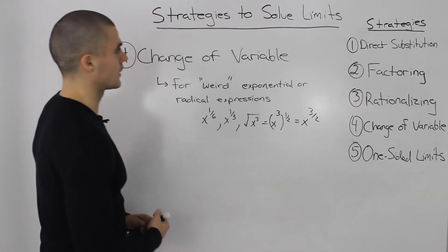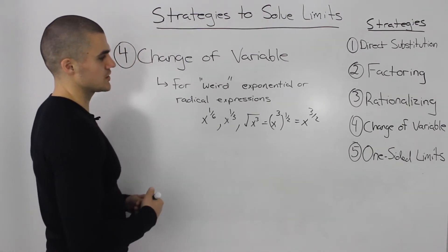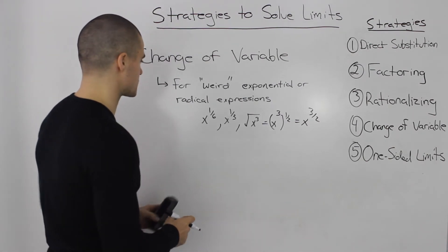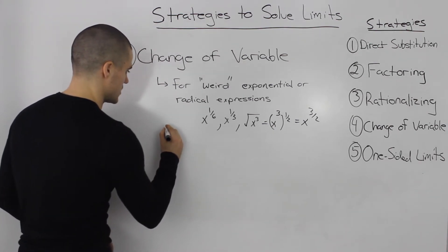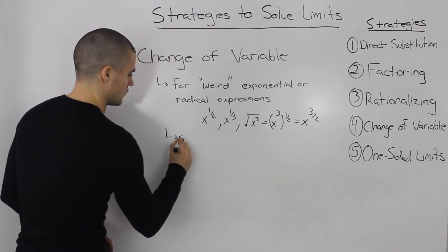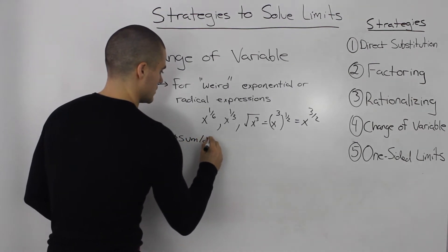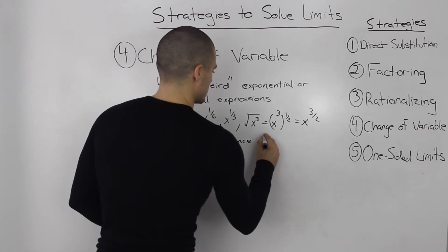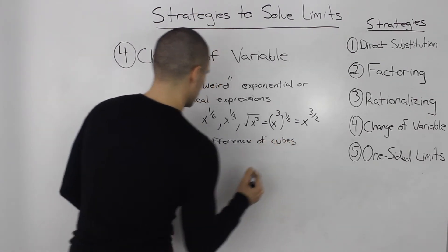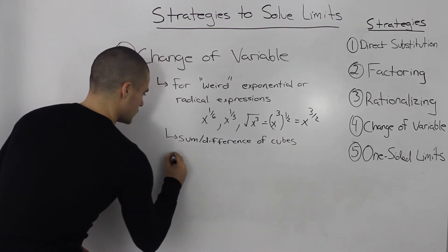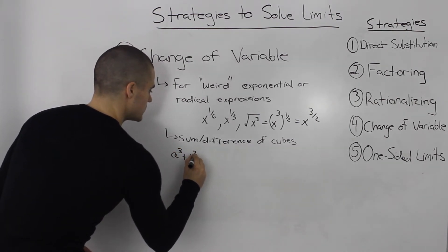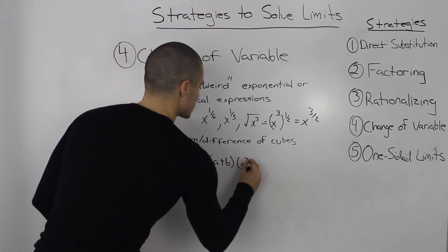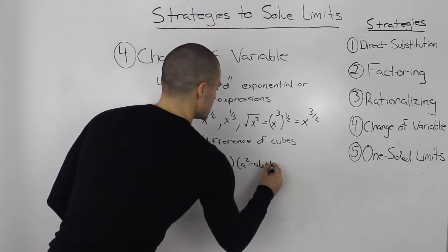Another part you're going to have to remember for the change of variable strategy is how to factor a sum and difference of cubes. So that's a review from advanced functions. So let's quickly go over that. So if you have a sum, a cubed plus b cubed, that's just equal to a plus b, a squared minus ab plus b squared.